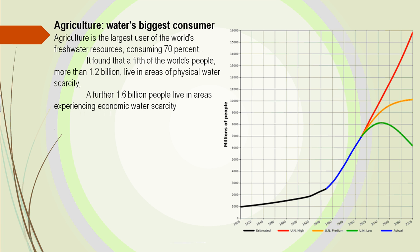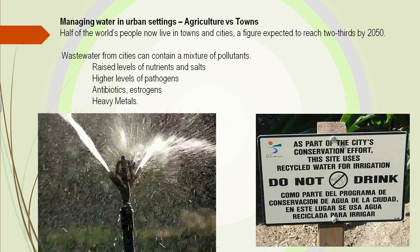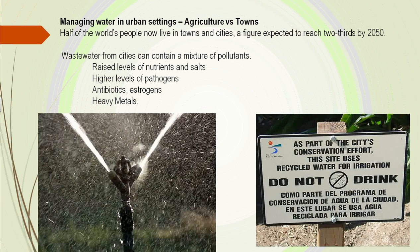Agriculture is the water's biggest consumer, taking 70% of fresh water. A large number of people — 1.2 billion — are living in areas without much water. As our population grows, our water supply is not growing with it. What do we do in urban areas? We like to use water freely, yet we're losing it.